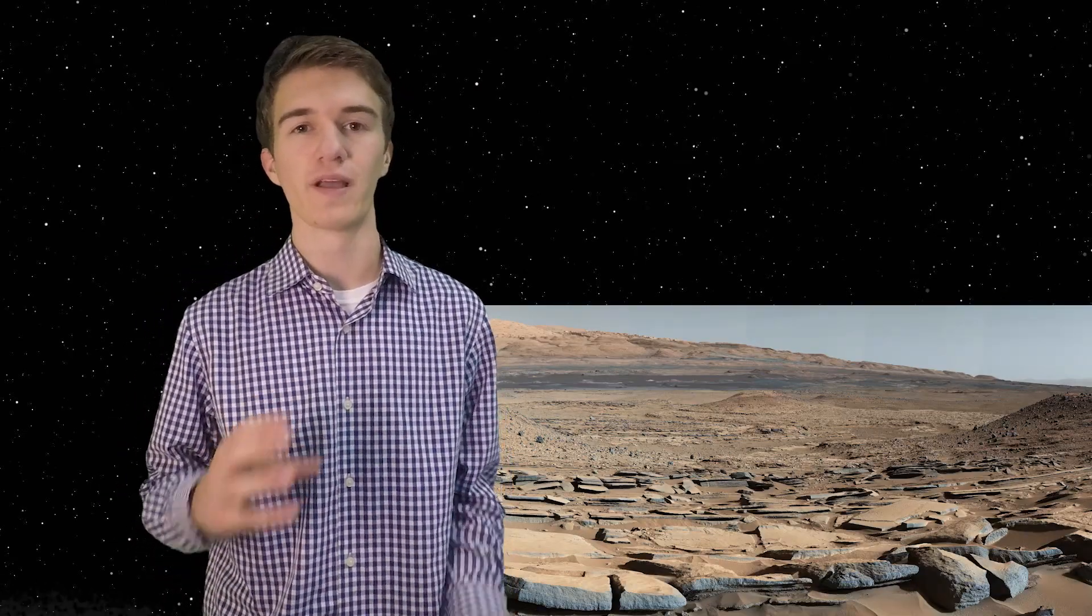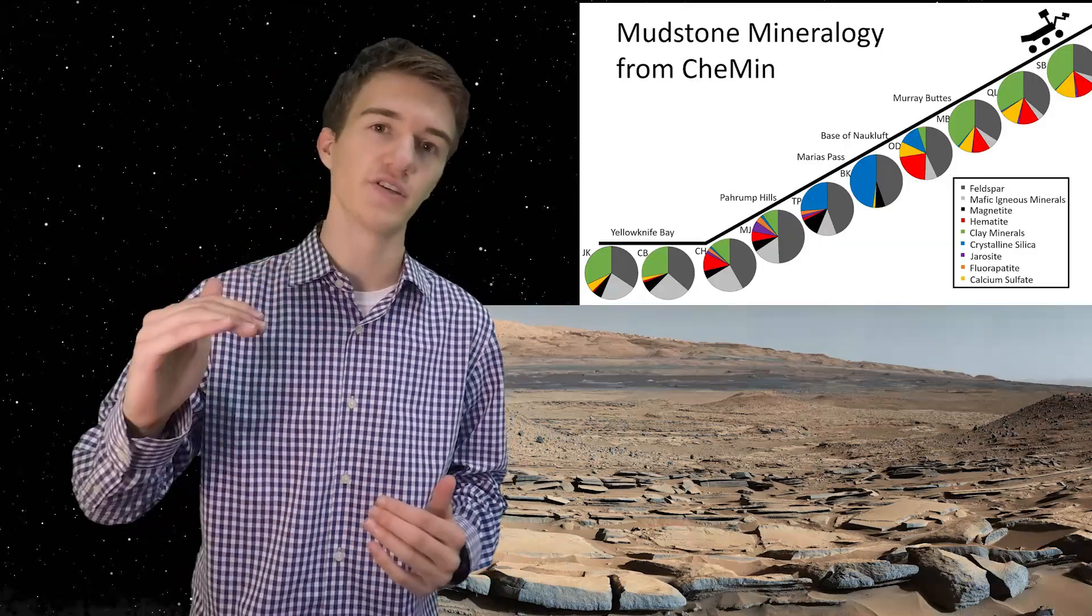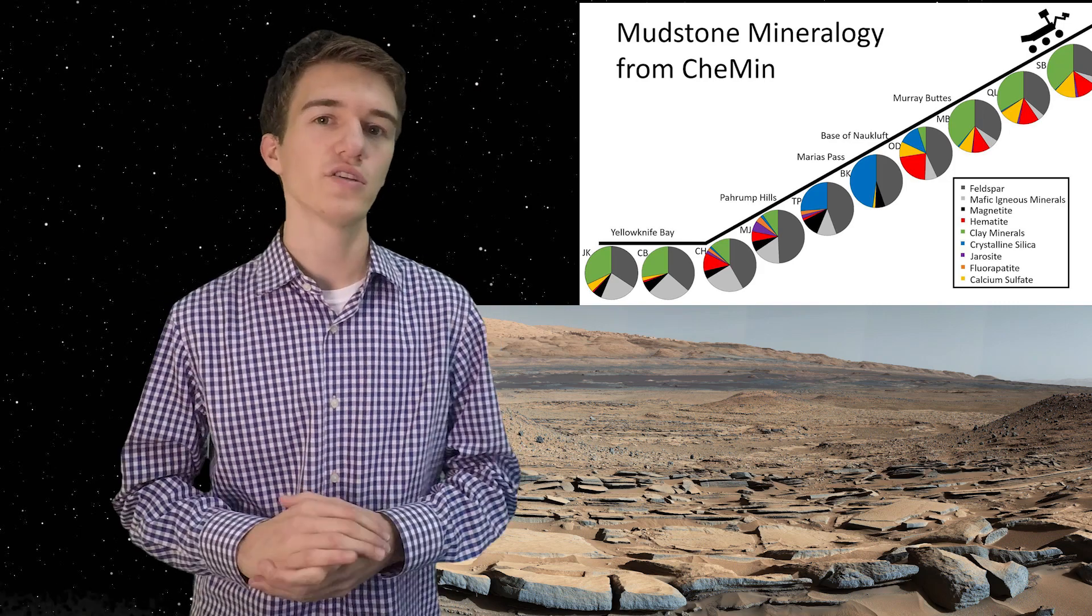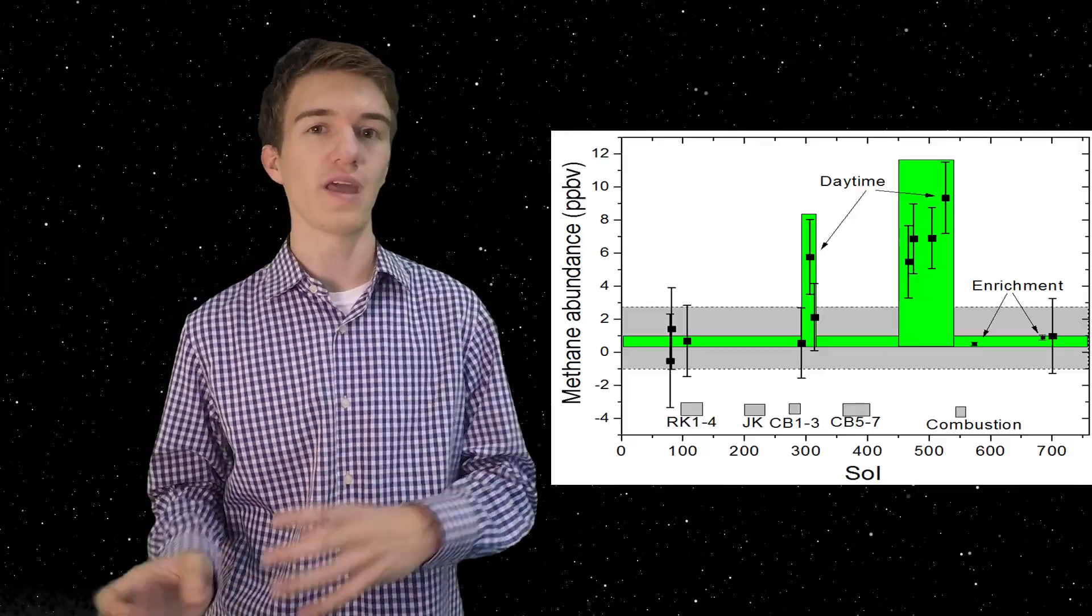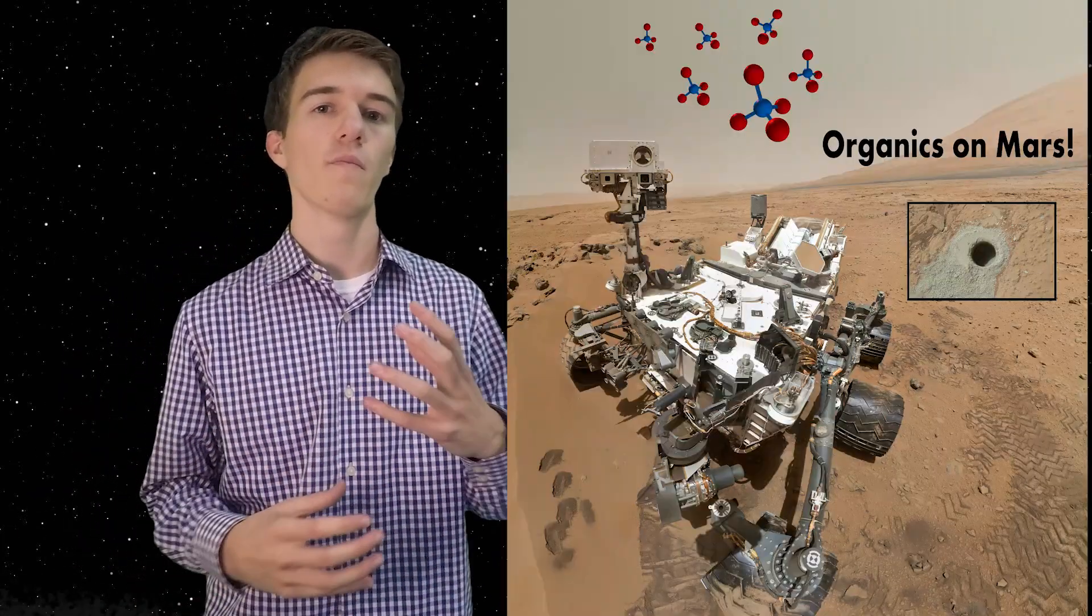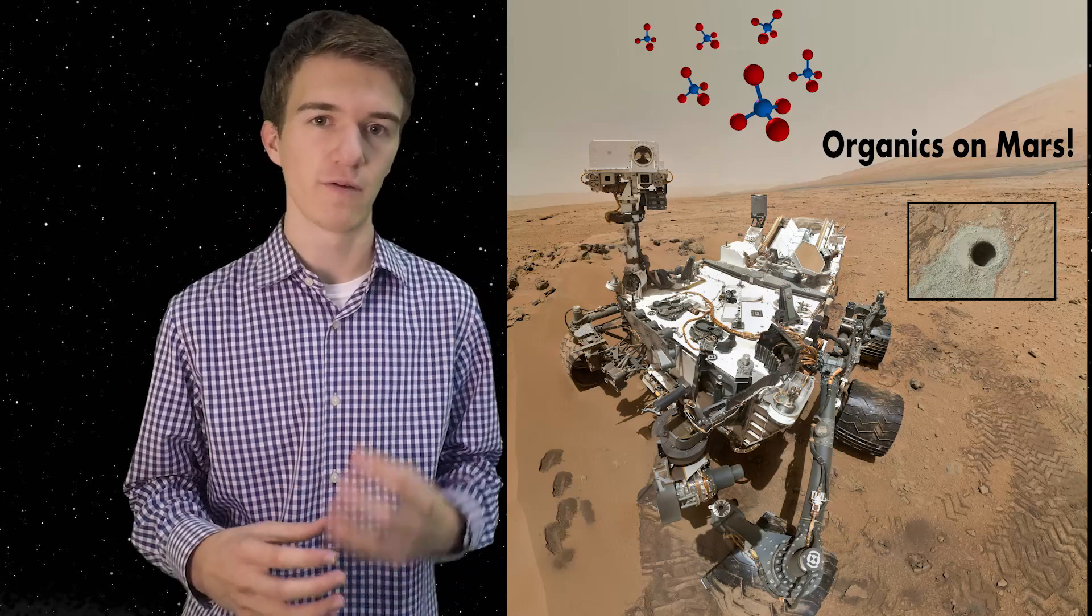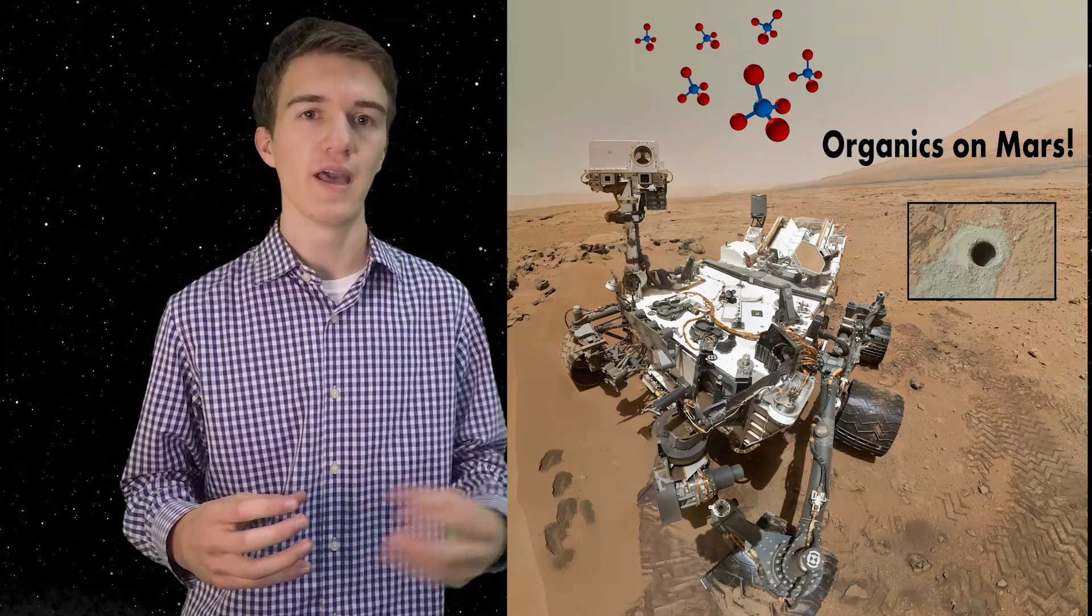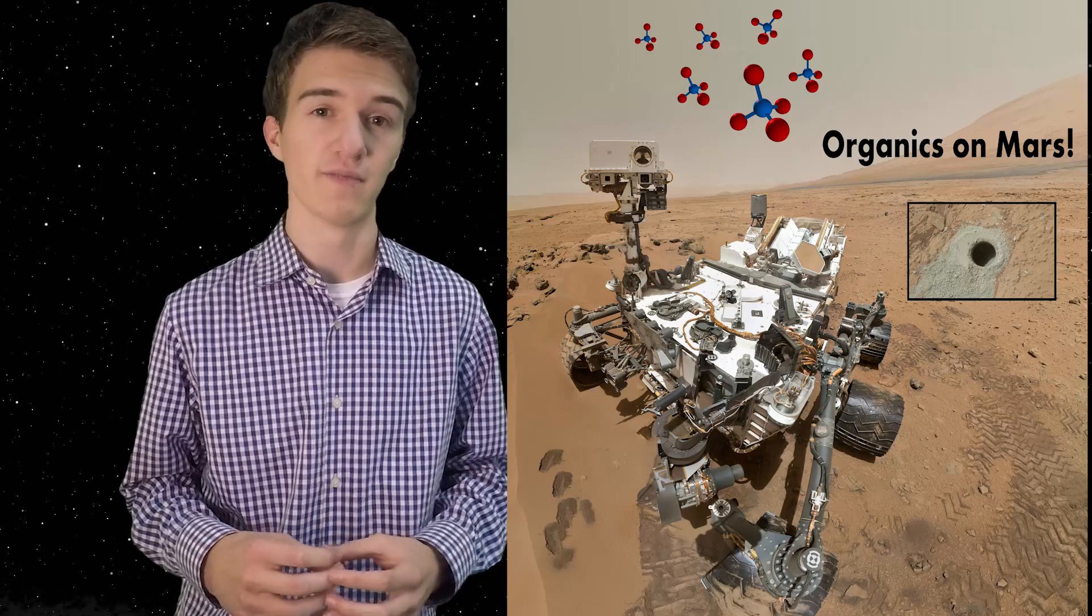In September, Curiosity finally made it to the base of Mount Sharp and was able to make different samples at different elevations of the crater. It also noticed that at some points there was a great increase and decrease in methane in the local atmosphere. A discovery that was made in 2014 was there's more organic materials that were determined from the soil in the areas surrounding the base of Mount Sharp.